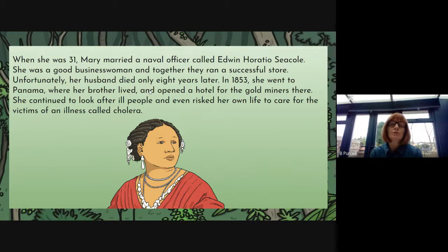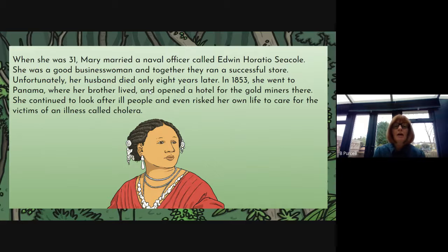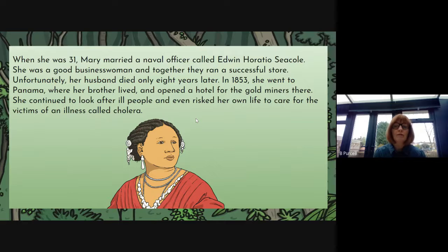In 1853 she went to Panama to be with her brother and opened her hotel — a business for gold miners. At the time, people were hunting gold all over the world and they wanted to find as much as they could because it would make them rich. But her desire to help people continued and she did look after ill people and risked her own life to care for people with an illness called cholera. You could expand on that — what was cholera, how did it affect humans, and how did she help?